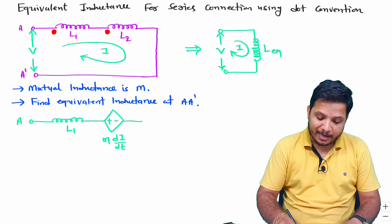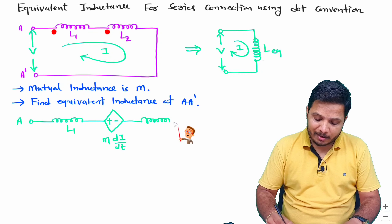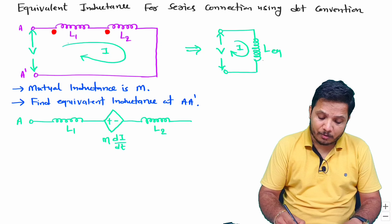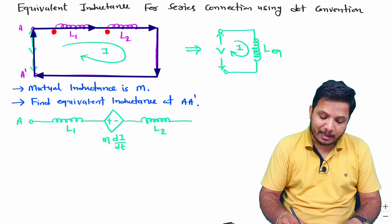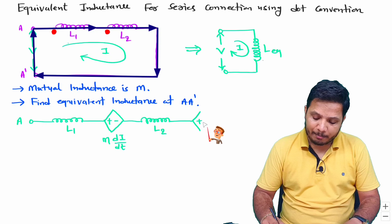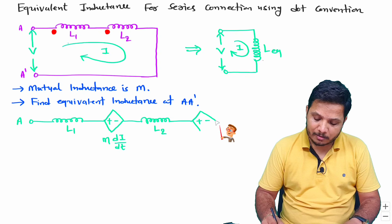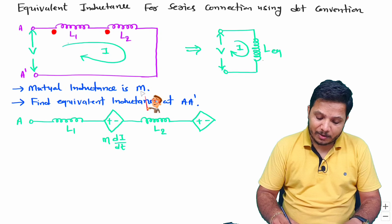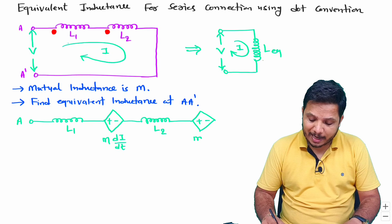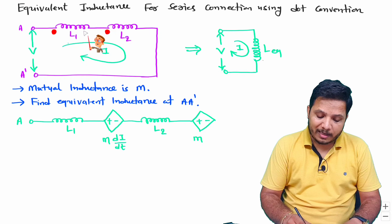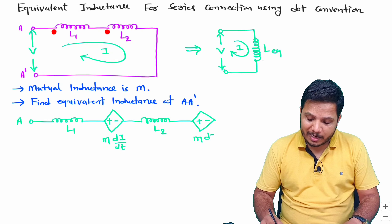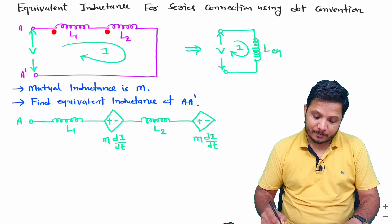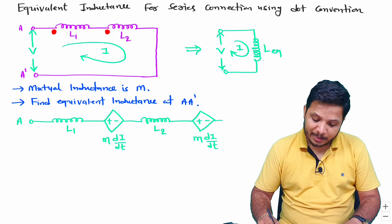So induced EMF in L1 has polarity plus-minus with value M·(di/dt). After that we have L2. The induced EMF in L2, due to current entering L2, will also have polarity plus-minus, and its value is M·(di/dt), which is the mutual inductance M multiplied by the rate of change of current in the other inductor.